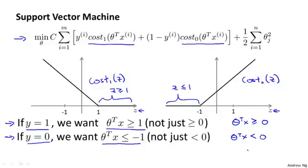But the support vector machine wants a bit more than that. It says don't just barely get the example right — don't just have it a little bit bigger than zero. What it really wants is for this to be quite a lot bigger than zero, say maybe greater than or equal to one. And it wants the negative case to be much less than zero, maybe less than or equal to minus one. And so this builds in an extra safety factor or safety margin into the support vector machine. Logistic regression does something similar too, but let's see what the consequences of this are in the context of a support vector machine.